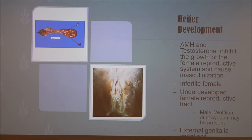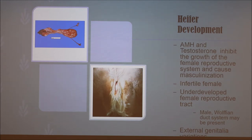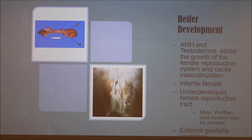The heifer will develop a Wolffian duct system if she undergoes masculinization and may also show signs of an epididymis, vas deferens, or vesicular glands, which would normally be found in the bull calf. The heifer also shows variation in her external genitalia — she could have an enlarged clitoris or a prominent tuft of hair on her vulva, which you can see in this picture. These external signs are a good way for a producer to identify a freemart in heifer from the outside.